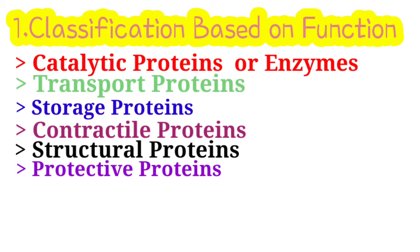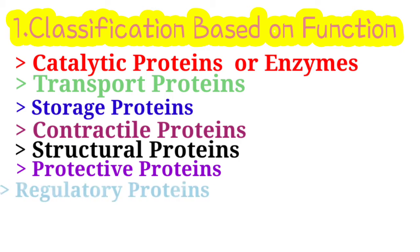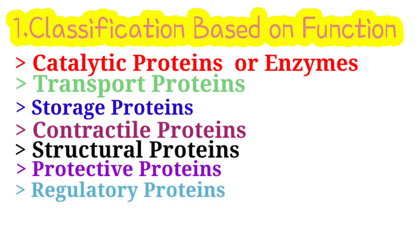Defense proteins are protective proteins — as the name indicates, they protect the body from microorganisms like viruses and bacteria. Examples are immunoglobulins and fibrinogen. Regulatory proteins, or hormones, regulate cellular or physiological activity — for example, insulin, glucagon, and growth hormone.